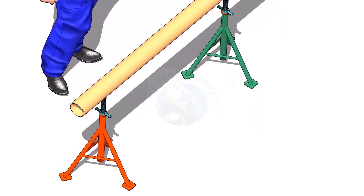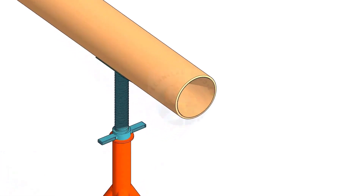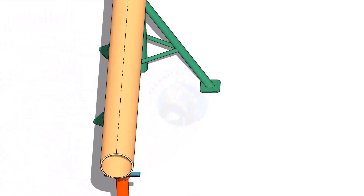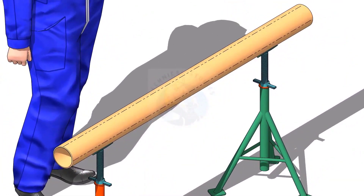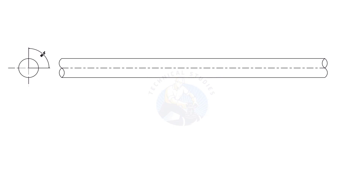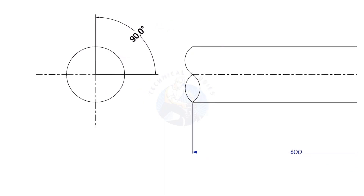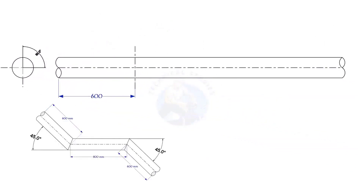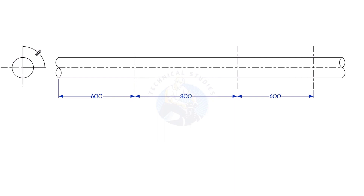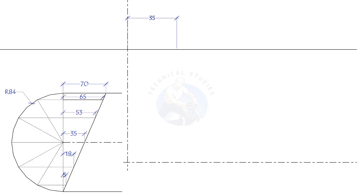Put the pipe on stands and mark 4 center lines. Mark 600, 800, and 600 millimeters respectively, as shown. Mark 35 millimeters to the right on the top side line, and 35 millimeters to the left side on the bottom line. Draw a smooth curve connecting these points.